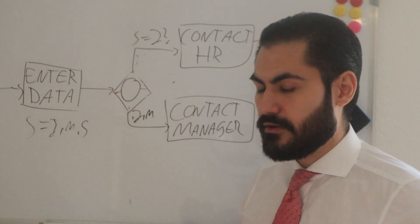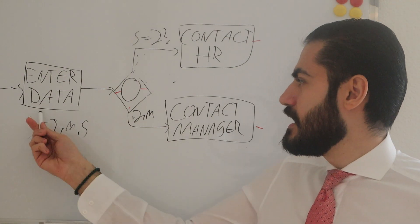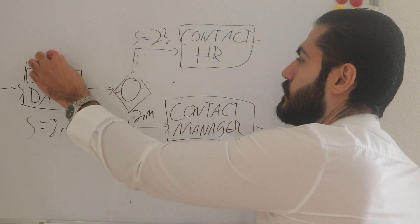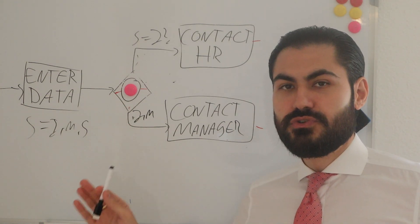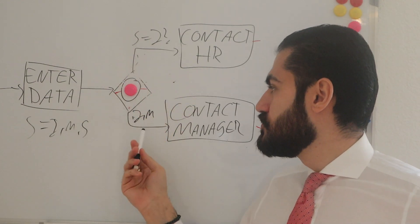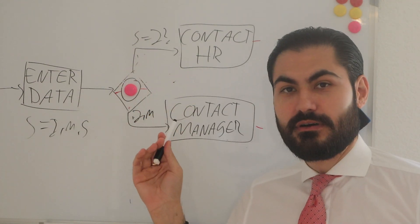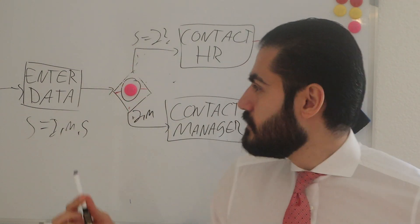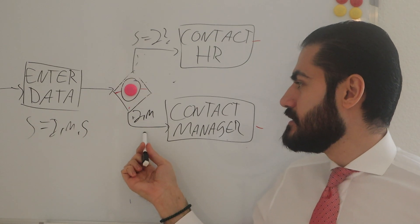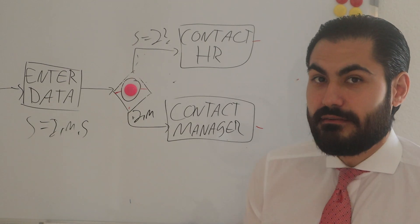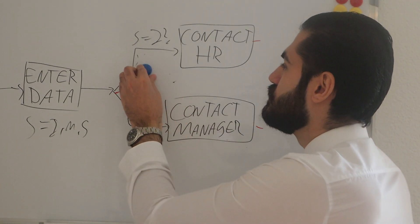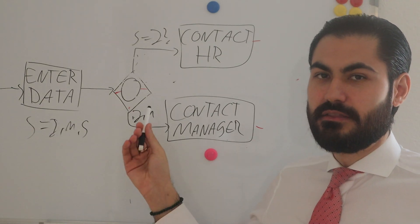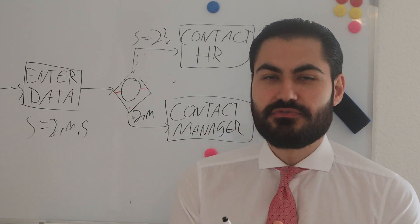Let me explain this carefully — it's very tricky. Say we enter junior and medium. The token reaches the inclusive-or gateway. Which conditions evaluate to true? Actually both do. One path asks if junior is present — yes — so we go that route. Another path covers junior and medium — yes — so we go that route too. Both evaluate to true, giving us two tokens again.